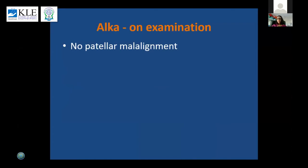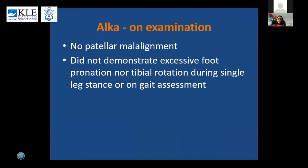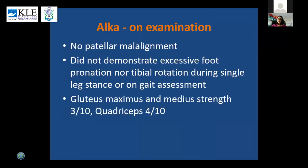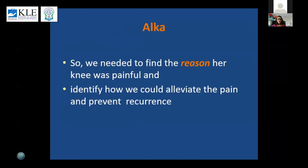On examination, there was no patella malalignment. She did not demonstrate any excessive foot pronation nor tibial rotation during single leg stance or gait assessment. Among the muscles tested, gluteus maximus and medius strength was 3/10 and quadriceps was 4/10. Hamstring length was normal. We needed to find out, in a young girl like this without obvious trauma, varus, valgus, or excessive foot pronation, what was the reason for her knee pain and how to decrease it and prevent recurrence.